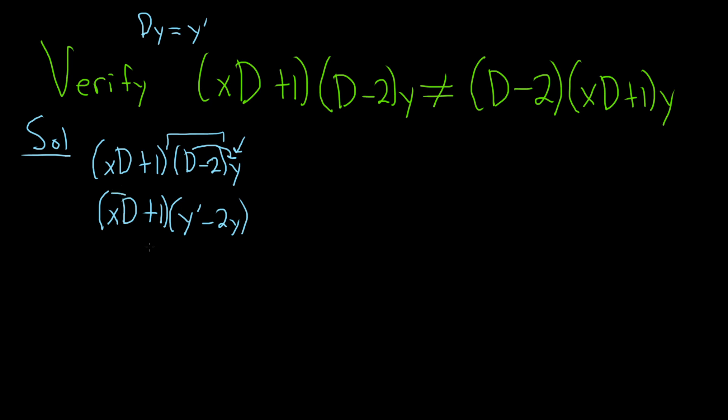Now we're going to take xD and apply it to each one. So taking xD and applying it to y prime will give us x. And then big D means you take the derivative of y prime, so y double prime. And then distribute, so we have this times this, and then this times this, means we have minus 2x, and then the derivative of y is y prime.